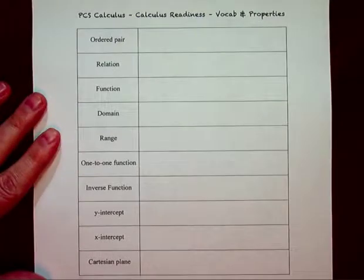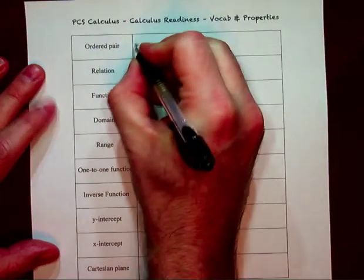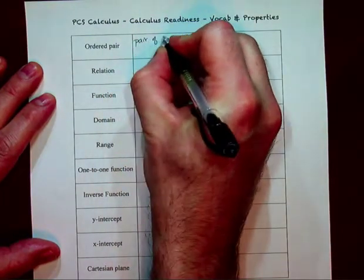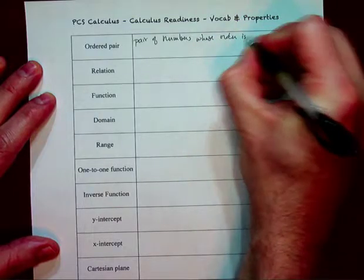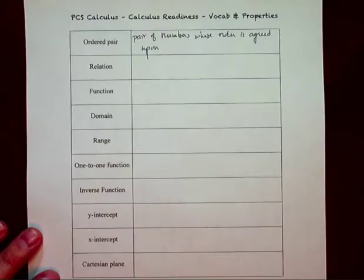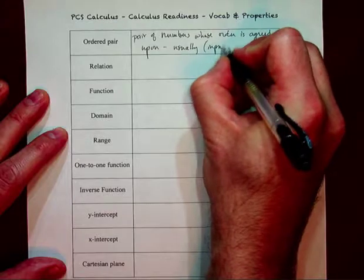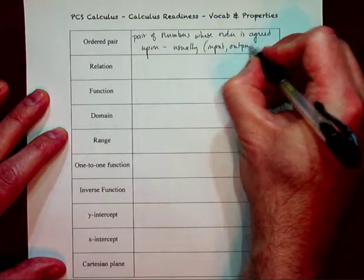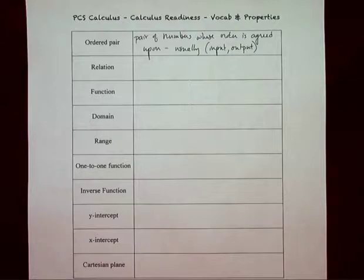an ordered pair is a pair of numbers that's ordered. It's a little bit more than that — it is basically a pair of numbers whose order is agreed upon, and because it's agreed upon, it communicates. When we're dealing with ordered pairs, most of the time it will usually be input-output for a given function. A pair of numbers whose order is agreed upon actually means something.